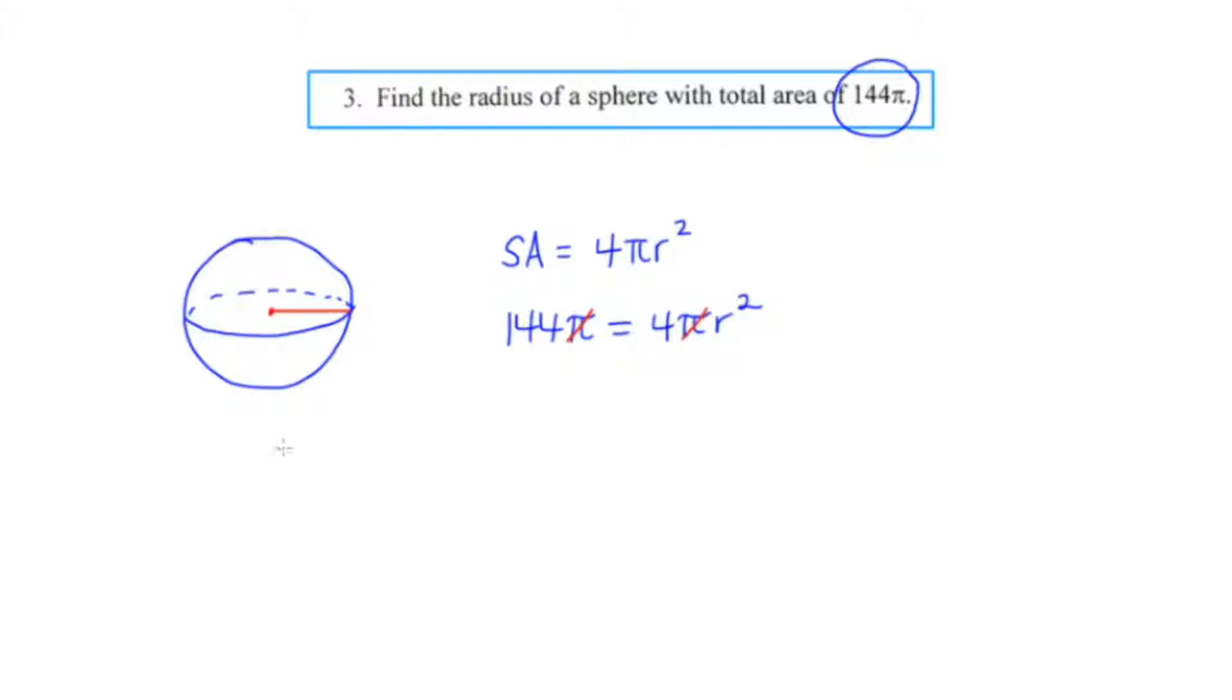Now if I divide both sides by 4, the 4s on the right are going to cancel out, and 144 divided by 4 is 36. So we're left with 36 equals r², which means if we take the square root, r equals 6.